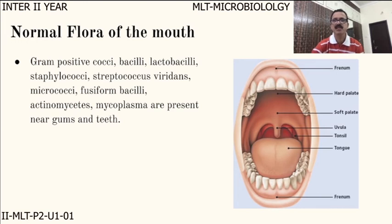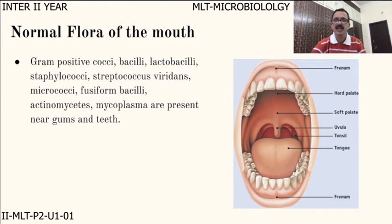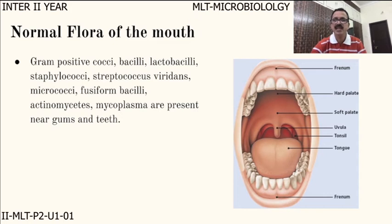Coming to the normal flora of the mouth: the mouth may have both aerobic and anaerobic bacteria. Gram-positive cocci, bacilli, lactobacilli, staphylococci, Streptococcus viridans, micrococci, fusiform bacilli, actinomycetes, and mycoplasma are present near the gums and teeth, establishing residence on teeth and gum surfaces.